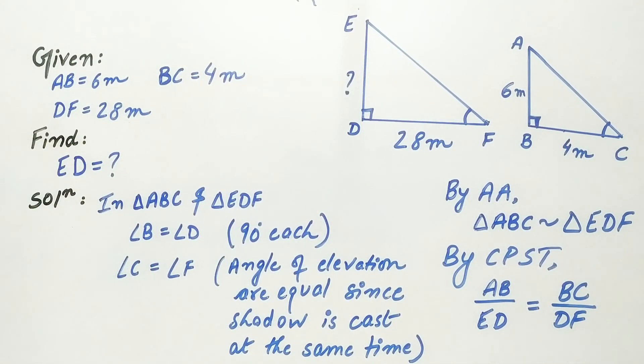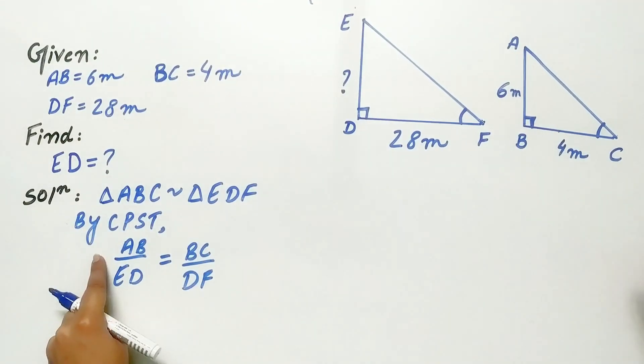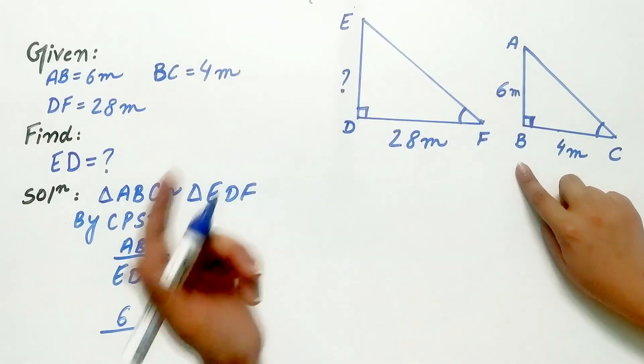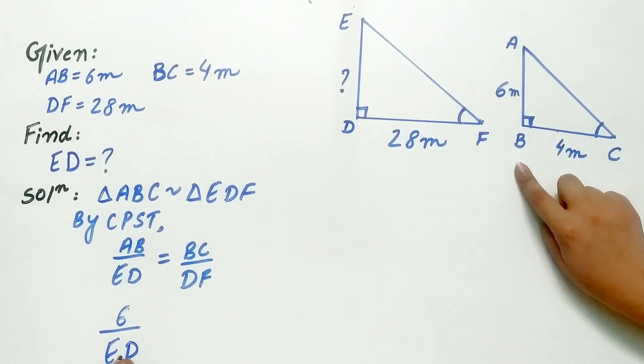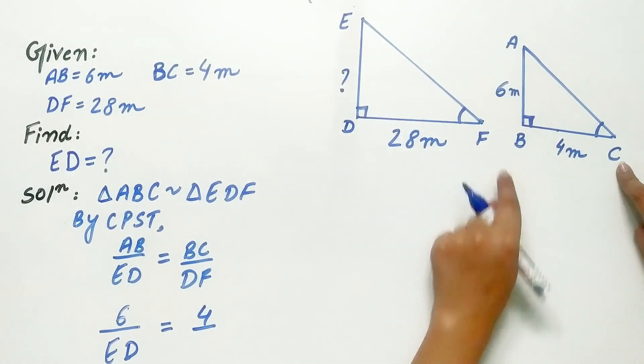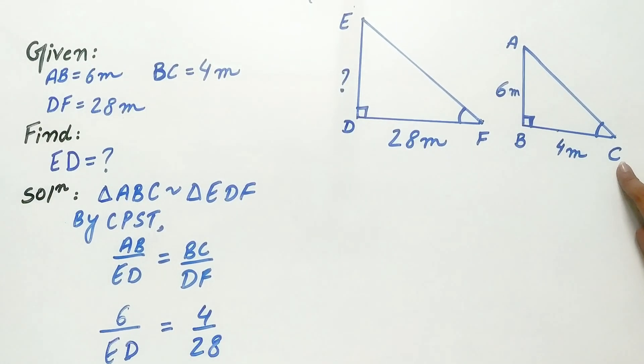Now substitute the values. AB is 6 meter. ED, we don't know. BC is 4 meter and DF is 28 meter.